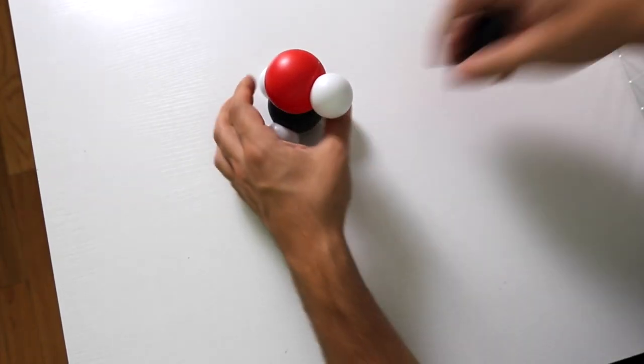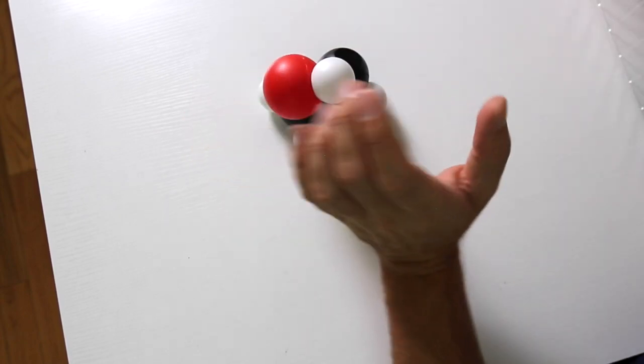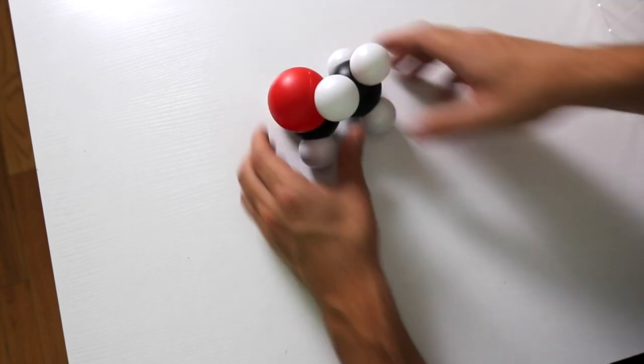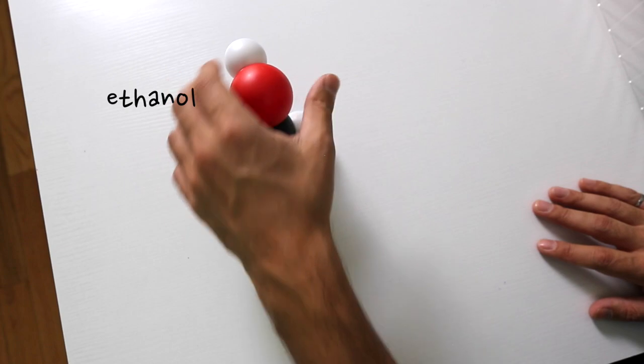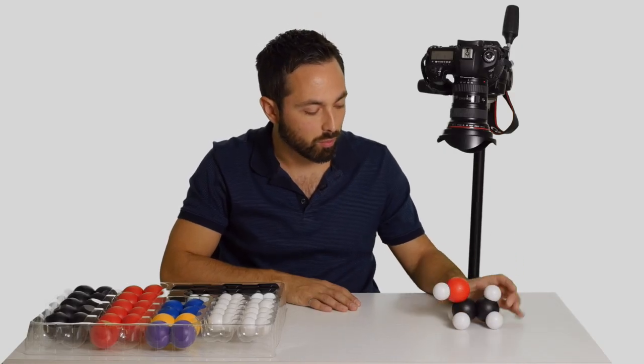If we add another carbon to the mix, well now we have two carbons and so the prefix is eth, we have ethanol. This is standard alcohol that you would find in alcoholic beverages.